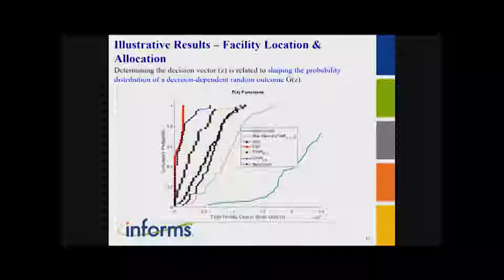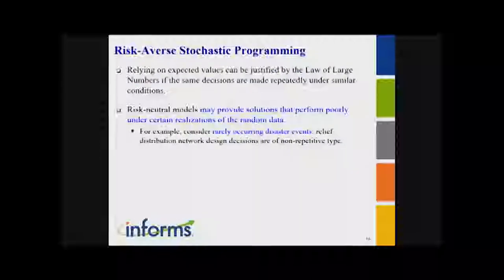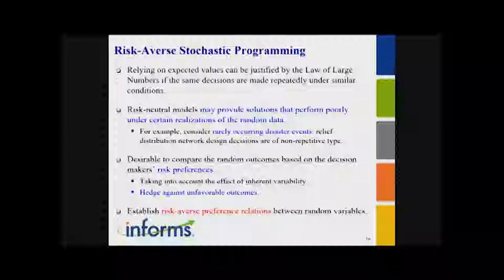The whole idea of shaping the distribution requires specifying the preference relation. Risk neutral can be justified by the law of large numbers when making repetitive decisions under similar conditions. But in other cases — for example, a rarely occurring disaster event where the consequences can be severe — risk-neutral can provide solutions that perform badly under certain realizations that can happen in reality. This highlights the call for risk-averse modeling: we need to establish a risk-averse preference relation among random variables.